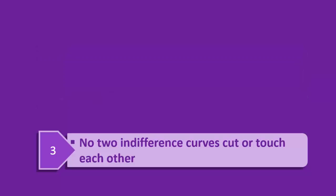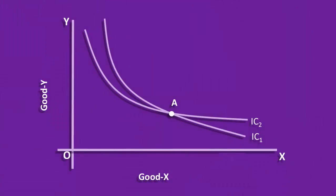No two indifference curves cut or touch each other. Look at this indifference curve map. It contains two indifference curves, IC1, IC2. Indifference curve 2 cuts indifference curve 1 at point A. Combination A is common to both indifference curves. Upper segment of indifference curve 2 is below IC1 and its lower segment is above IC1.